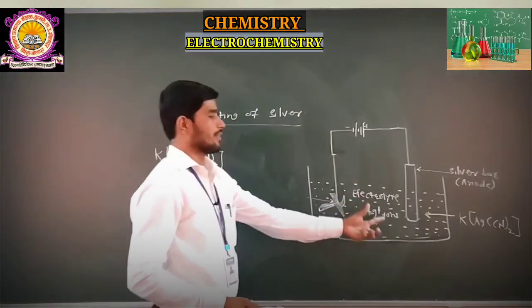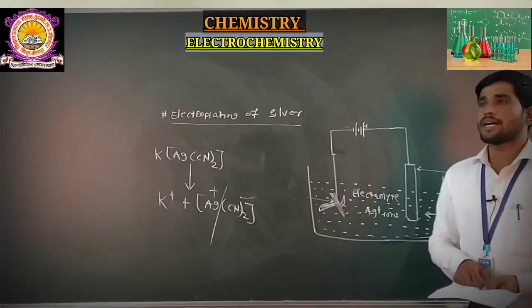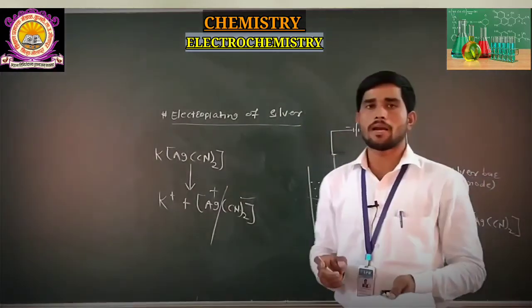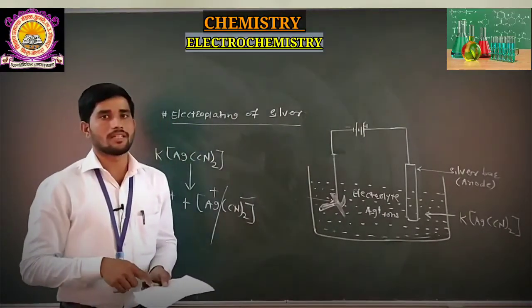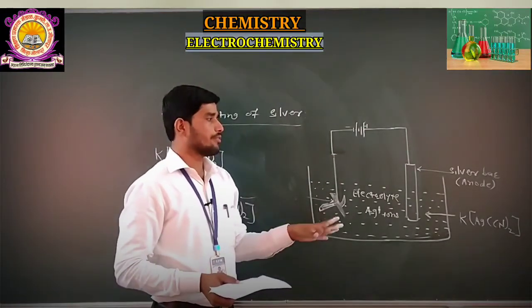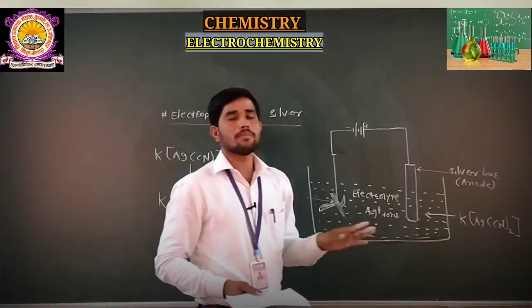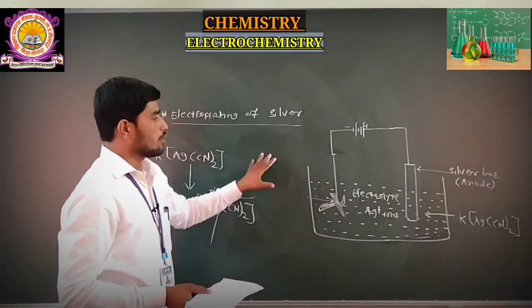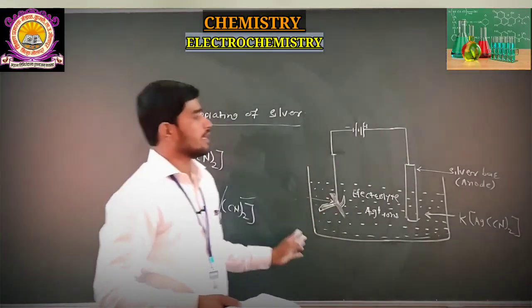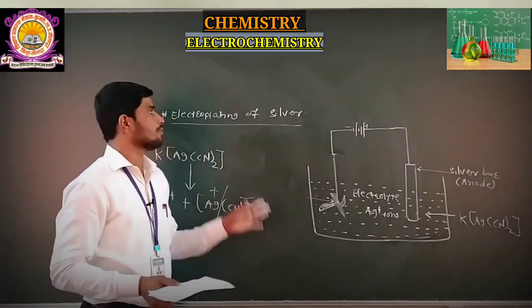The conclusion of the electroplating of silver on an iron spoon: this electroplating is done by means of a superior metal on an inferior metal when the electric current is passed. The electrolyte used is KAg(CN)₂ — potassium argentum cyanide — and the cathode is the article to be plated, while the anode is the silver bar. This completes the process of electroplating.